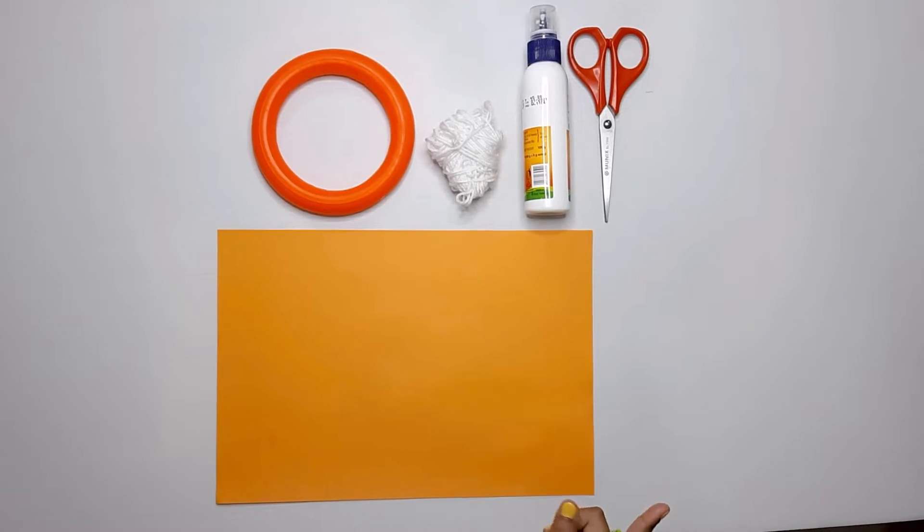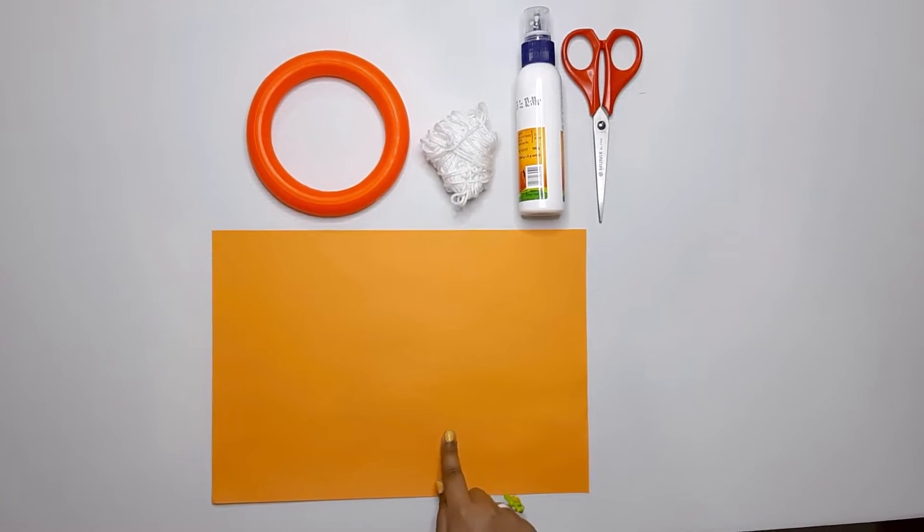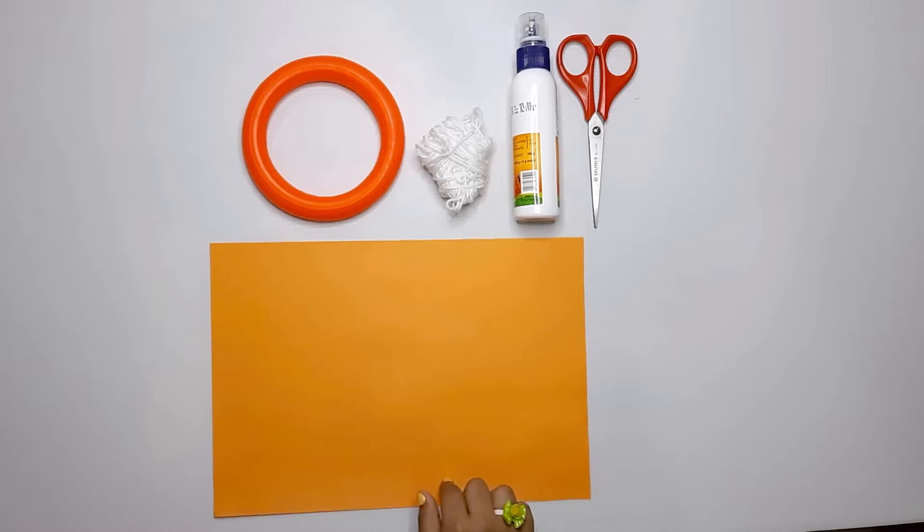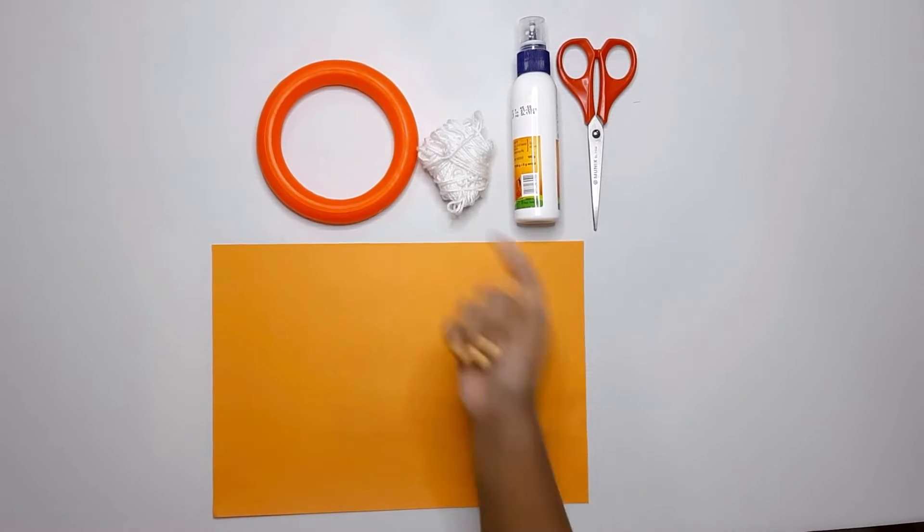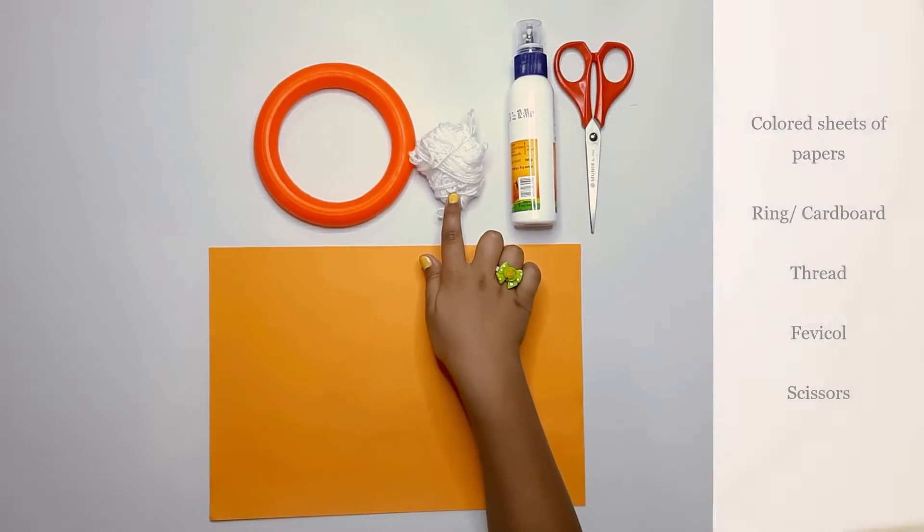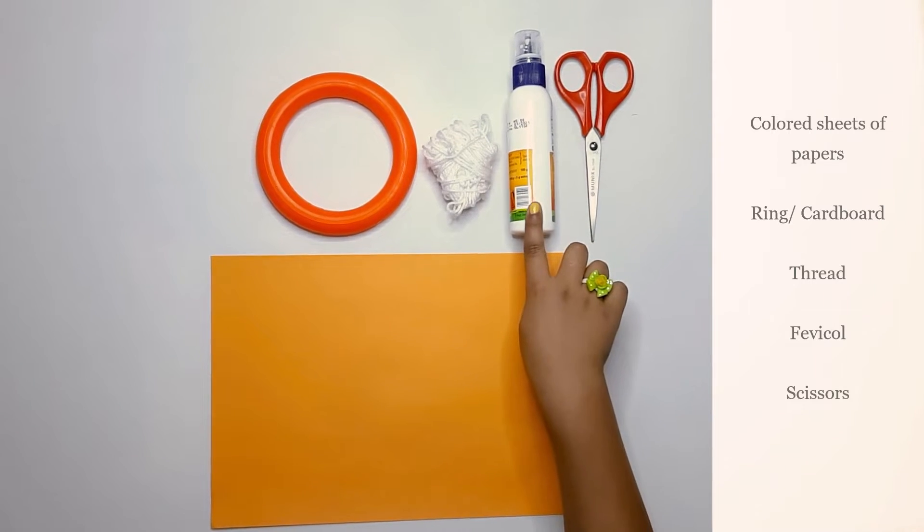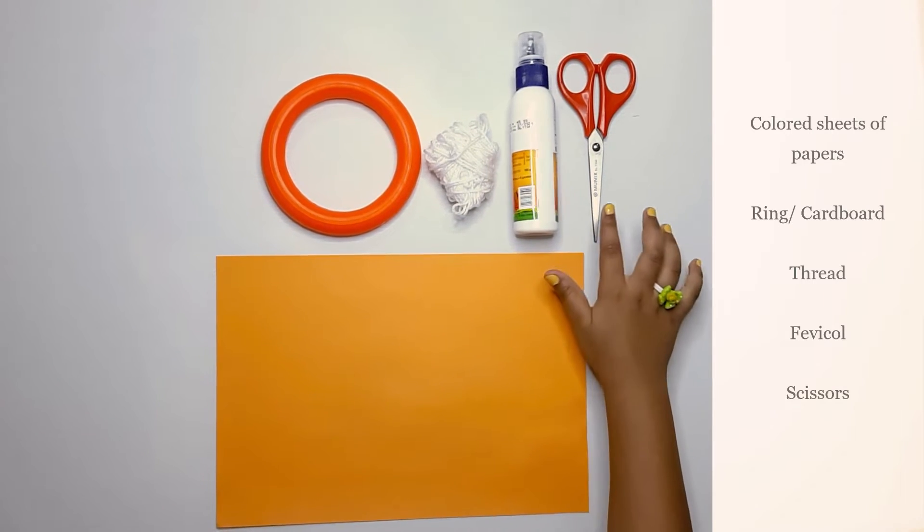Now let's see what we need. We need a few sheets, colored sheets of paper and a ring or a piece of cardboard, thread and then fabric glue and scissors.